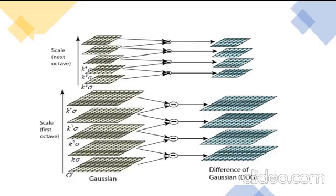Once these Differences of Gaussian are found, images are searched for local extrema over scale and space. For example, one pixel in an image is compared with its 8 neighbors as well as 9 pixels in the next scale and 9 pixels in the previous scale. If it is a local extrema, it is a potential key point.